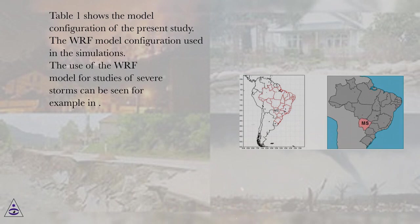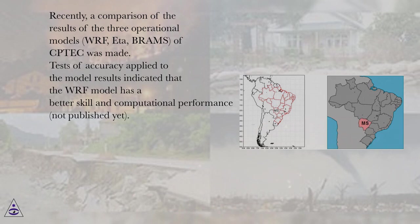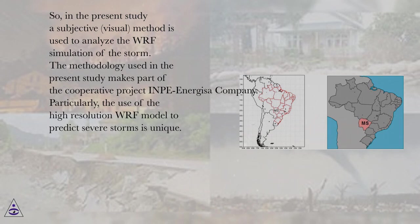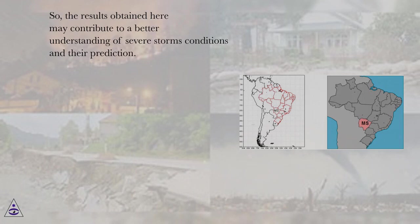Table 1 shows the model configuration of the present study. The use of the WRF model for studies of severe storms has been demonstrated in previous simulations. Recently, a comparison of the results of three operational models — WRF, ETA, and GRAMS — of CPTEC was made. Tests of accuracy applied to the model results indicated that the WRF model has better skill and computational performance (not published yet). In the present study, a subjective visual method is used to analyze the WRF simulation of the storm. The methodology makes part of the cooperative project INPE–Energizer company. The use of the high-resolution WRF model to predict severe storms is unique, and the results obtained here may contribute to a better understanding of severe storm conditions and their prediction.